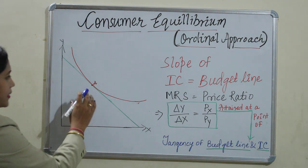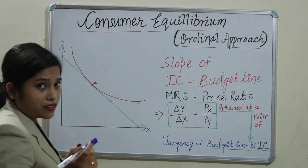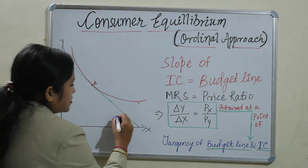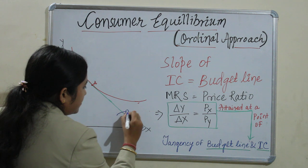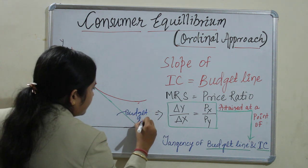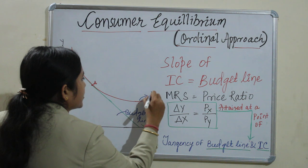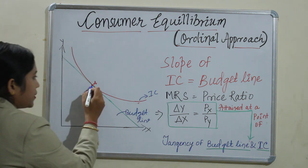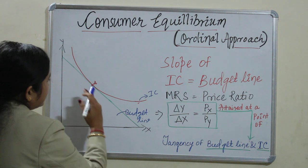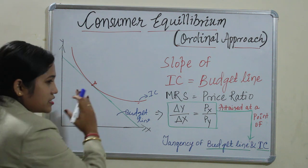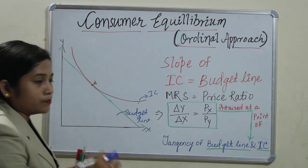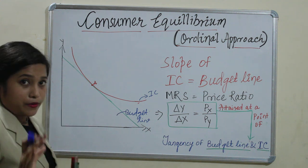Graphically, we have already covered the graph of the budget line. This is your budget line, and this is your indifference curve. Here, point A is where the budget line is tangent — just touching the surface of the indifference curve. That is the point of equilibrium.